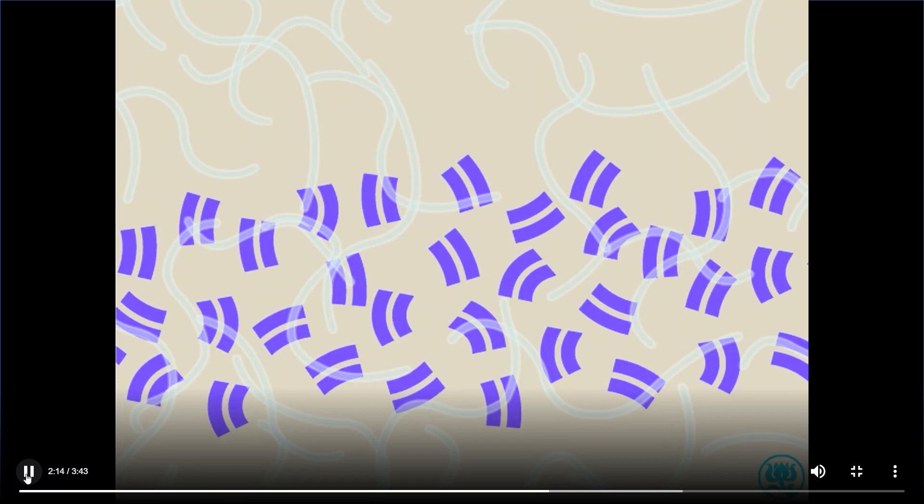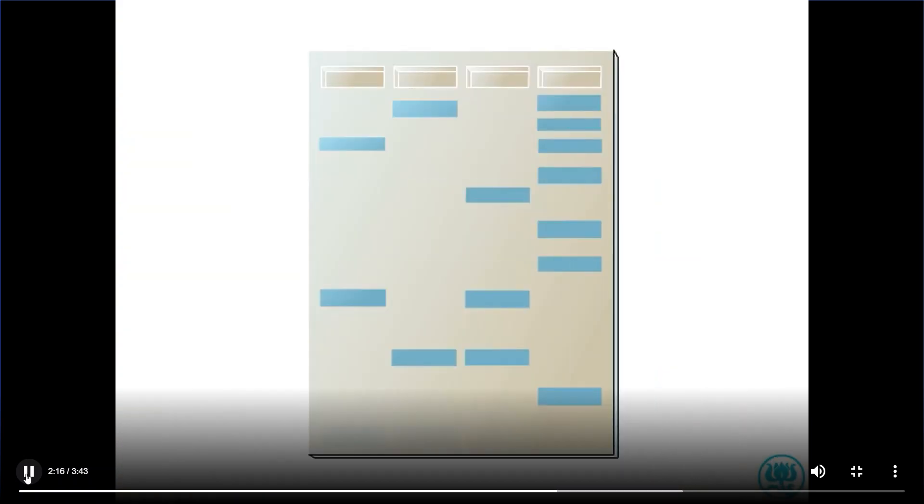In many cases, a researcher may want to determine which DNA fragment contains a DNA sequence of interest. To do this, the researcher prepares the DNA in the gel to make a copy, known as a blot.